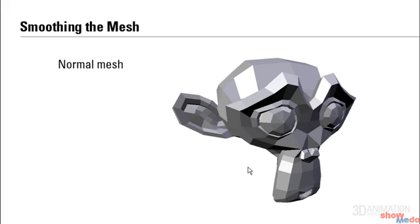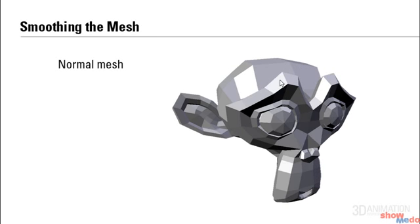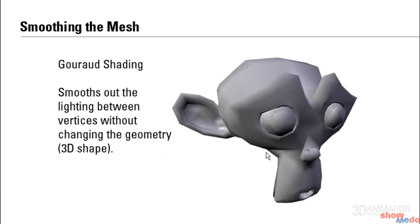Now let's go on to different ways that you can smooth a mesh. This is what our mesh usually looks like. A lot of characters you see actually look very similar to this — it looks like the model has just been chiseled out, and it doesn't look very smooth. There are two ways we can smooth it. The first method is done using Gouraud shading. This smooths out the lighting between vertices without changing the geometry or the 3D shape. As I switch between these two images, you can see that the shape hasn't changed — it's just the lighting has been smoothed out between the faces. This is a very fast way, processing-time-wise, to make something look smooth.